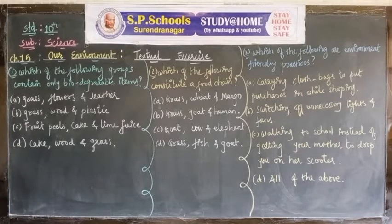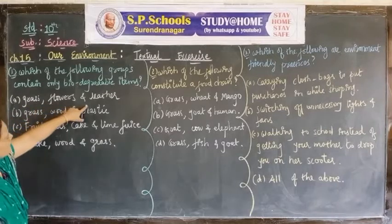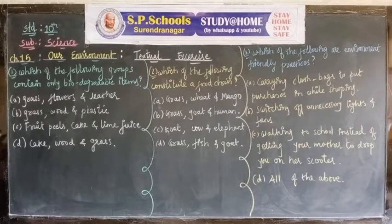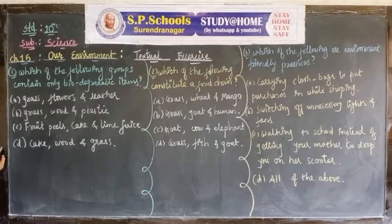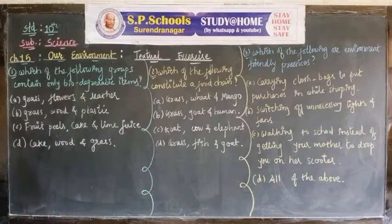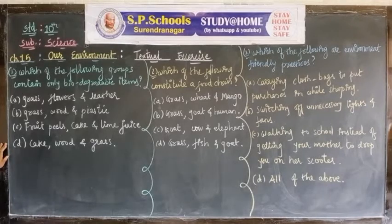Question one: Which of the following groups contain only biodegradable items? The groups given are: A) grass, flowers, leather; B) grass, wood, and plastic; C) fruit, pills, cake, and lime juice; D) cake, wood, and grass. Note: there may be a slight print mistake in the textbook — a non-biodegradable item may appear in one option.